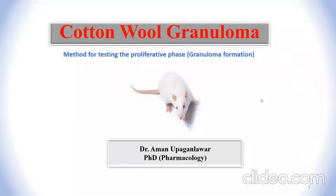Today we are going to discuss one method for studying anti-inflammatory activity — that is cotton wool granuloma. This method is widely used for chronic inflammatory conditions and also determines the proliferative phase or granuloma formation in the animal.